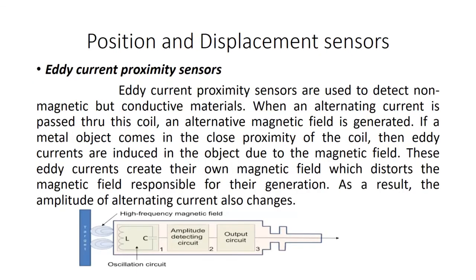Next are position and displacement sensors. If we want to know the movement of an object, we have to identify the actual position of the device. Therefore we need position sensors. The first one we will see is eddy current proximity sensors. Generally, we go for proximity sensors, and here we look at eddy current proximity sensors.